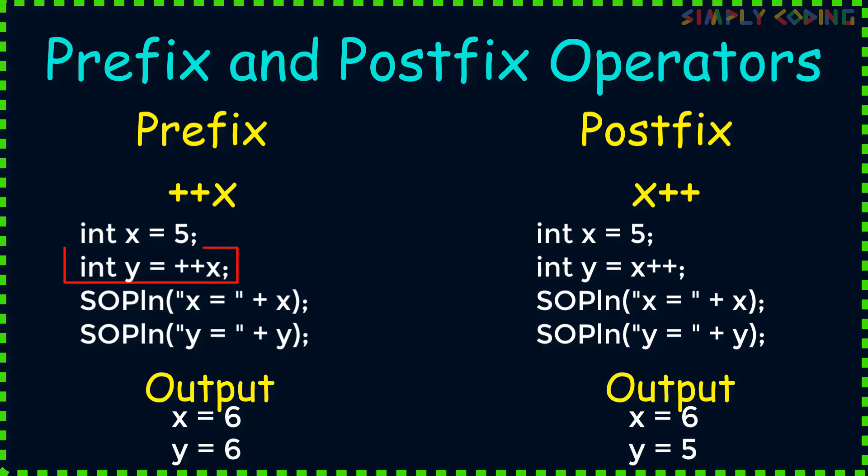But y which was assigned a prefix operator, here x got incremented first and then its value was assigned to y. So it got assigned value of 6. But in the second code where y got a postfix operator, the value was assigned to y first and then x was incremented. So it got a value of 5 only.